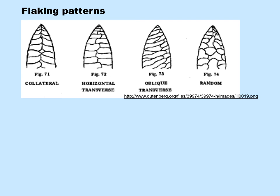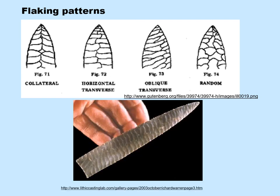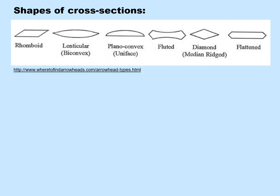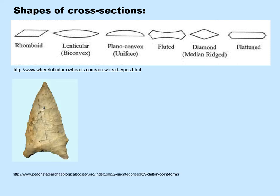The flaking patterns may be distinctive, such as oblique transverse flaking, which takes a great deal of skill. The shape or cross section of the bifacial point may also be distinctive. An example of this are Dalton points, which are rhomboid in cross section because when they sharpen the edges, they do so unifacially — striking one edge on the opposite side so flakes come off on one side, then reversing for the other edge, resulting in a rhomboidal cross section.